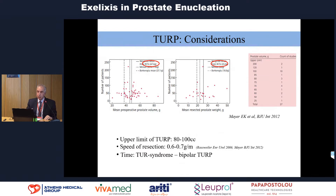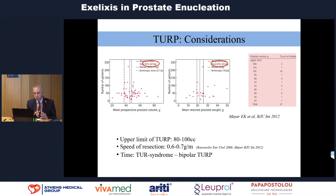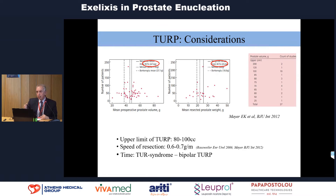For example, the upper limit for TURP is between 80 to 100 grams. It depends on the experience and expertise of the surgeon, but when we talk about the average urologist, the average speed of resection is around 0.6 to 0.7 grams per minute. That means that for a big prostate we need to prolong anesthesia time and operation time, and then we may have a higher incidence of TUR syndrome. In the bipolar TUR era, TUR syndrome is reduced, but there is always the risk of fluid absorption for our patients.